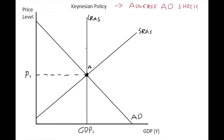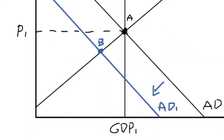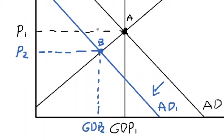We start off with our long-run aggregate supply model in equilibrium with a given price level and GDP level. An adverse aggregate demand side shock — maybe due to a decrease in consumption caused by a fall in optimism and expectations amongst consumers — causes the aggregate demand curve to shift downwards to the left. We can call that new curve Aggregate Demand 1, and we can show a new equilibrium at point B, where in a classic recession the price level has dropped and output has dropped to GDP 2.